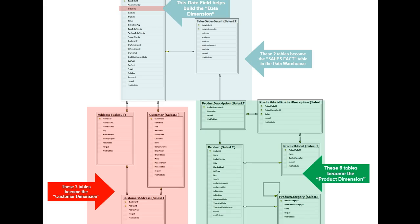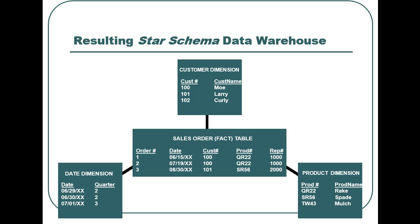Finally, the sales order date from the sales order header table would be used to create our date dimension in our data warehouse. Our resulting data warehouse using the star schema approach would look like this — a central fact table containing transactional data and three dimensional tables. Notice that we have greatly reduced the number of tables and table joins, which makes queries and reports run much faster.